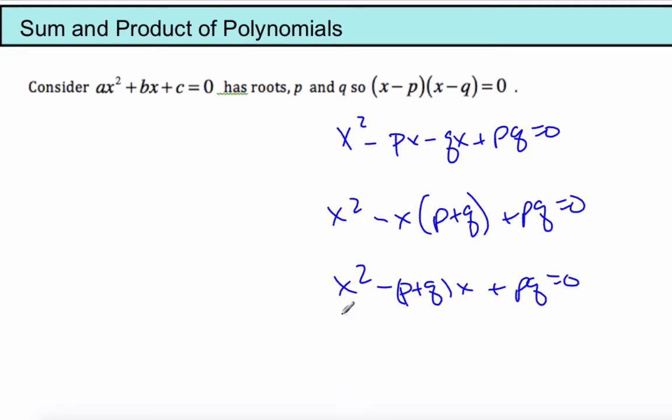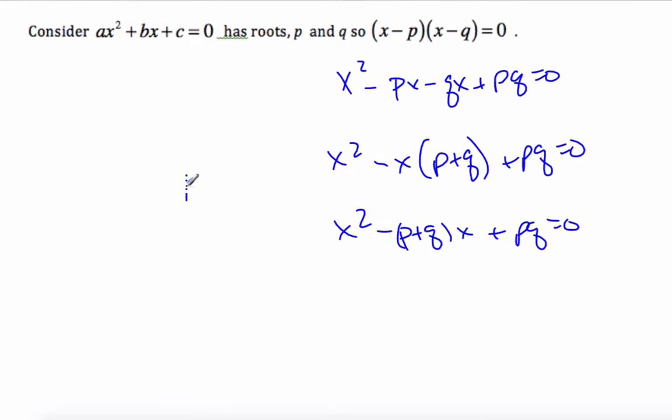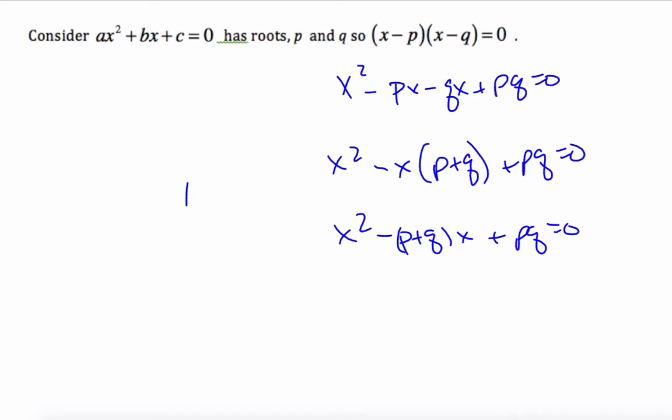Now, this is written almost in the form of ax² + bx + c. So I'm going to then come along, and I'm going to say, I'm going to multiply this equation by a.